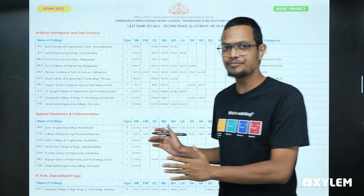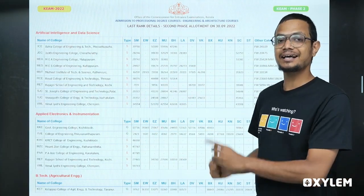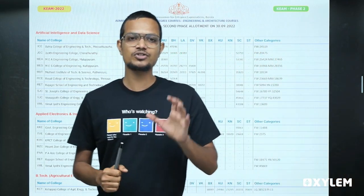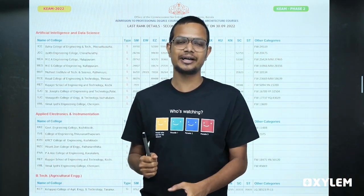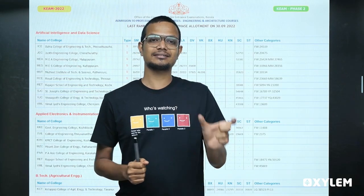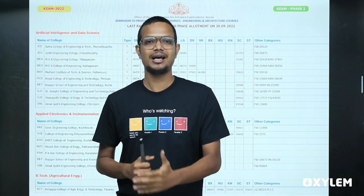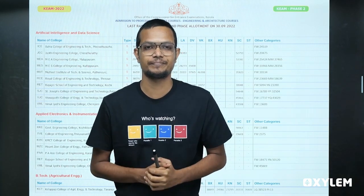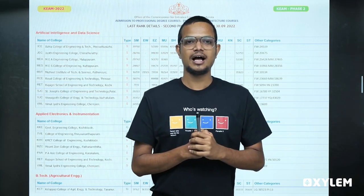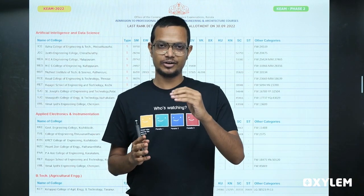That is our data. In the Office of the Commission for Entrance Examination, you will choose the second phase allotment. You can use the first allotment and the c.k.gov.in website. You can use the last rank list of colleges. You can use the entrance commissioner for the first allotment and also the second allotment process.